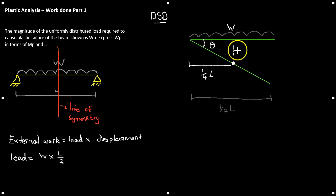So, our external work, then, becomes WL over 2 times L over 4 times by theta. And this will give us the value of WL squared over 4 theta.